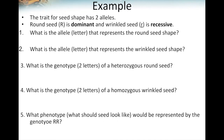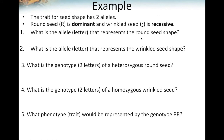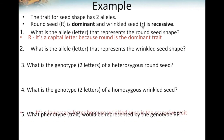Let's try an example using the trait for seed shape. Round seeds are dominant, represented with a capital R, and wrinkled seeds are recessive, represented with a lowercase r. The first question: what is the allele or letter that represents round seed shape? We use a capital R because round seed is the dominant trait. The second question: what is the allele or letter that represents wrinkled seed? We still use the letter R, but because wrinkled seed is recessive, we make it a lowercase r. The third question: what is the genotype of a heterozygous round seed? For genotypes I need two letters — because it's heterozygous, the letters must be different, and because it represents round seed, it must have a capital R. So the genotype is written as capital R and lowercase r. Make it a rule: whenever we see heterozygous, always put the capital letter first.